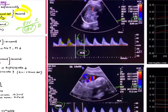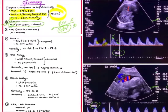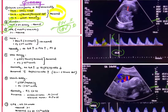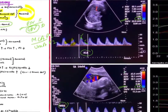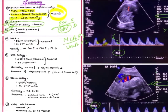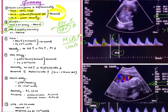Next in line is the CPR — the Cerebro Placental Ratio. CPR is the ratio of MCA PI upon umbilical artery PI. Here, the PI value of MCA is 1.84 and the PI value of the umbilical artery is 0.80. The PI ratio of MCA upon umbilical artery should be greater than one. In this case it is greater than one, so the CPR is absolutely normal.